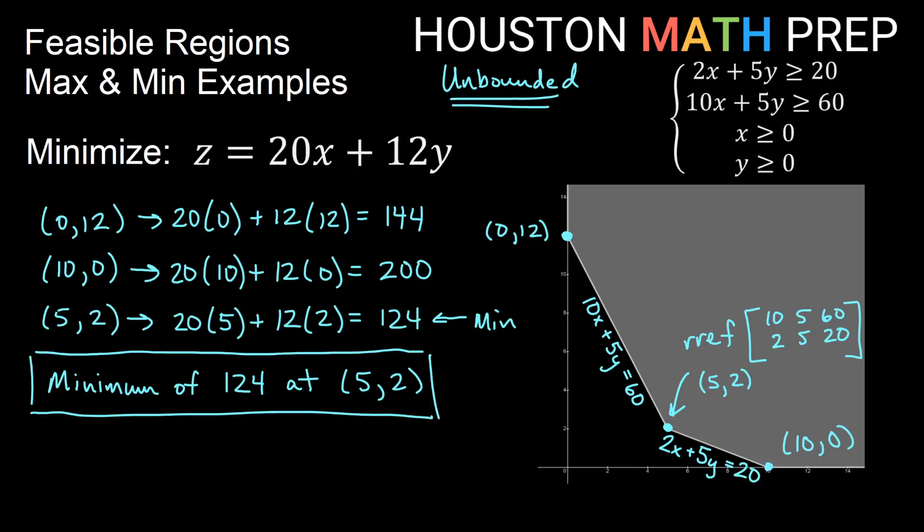Hopefully this gives you a good idea of how to find a max or a min — or both — on your feasible regions. Remember to decide if you have a bounded or unbounded region. A bounded region is guaranteed to have both a max and a min. With an unbounded region, you may not have one or both. Thanks for watching — we'll see you in the next video.